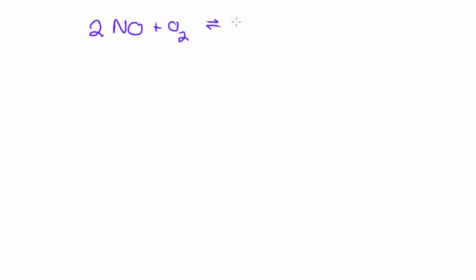Chemical equilibrium rates and concentrations. There are a couple of things that can disturb an equilibrium. If we have a look at this chemical formula: 2NO + O₂ → 2NO₂, with ΔH less than 0. This is a balanced chemical equation at equilibrium conditions, and ΔH less than 0 tells you that energy is being released when this reaction moves from left to right, which means that it's exothermic.